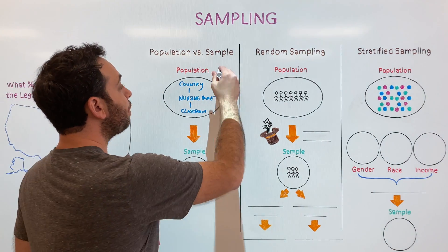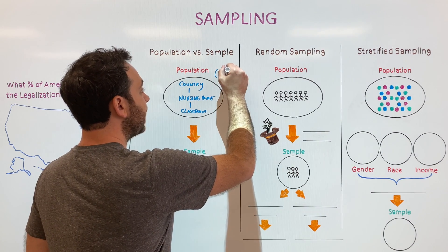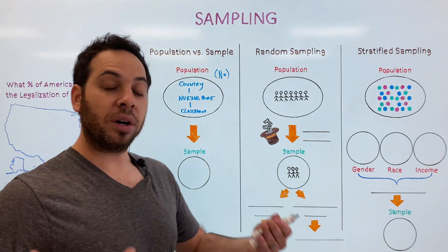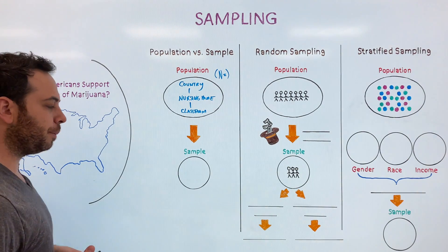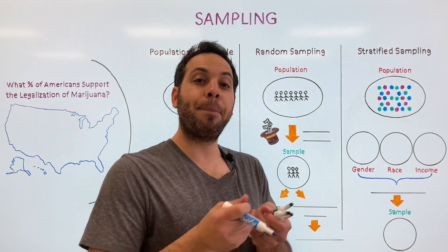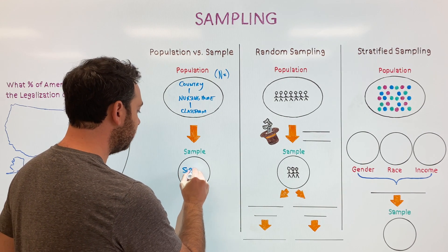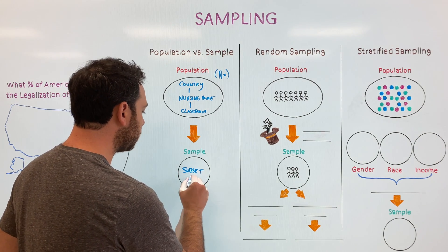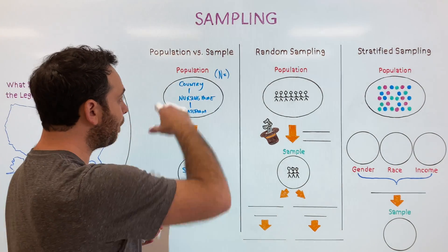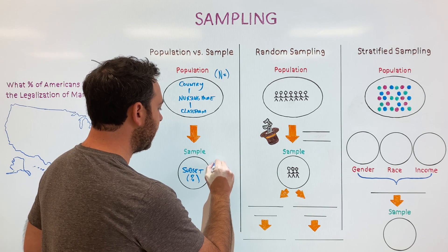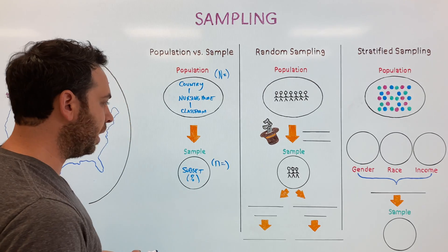Note that the population is represented by the capital letter N. So if you ever see capital N equals a number, you know they're referring to the population. The sample, on the other hand, is a part of the population — a subset. You might denote a sample with a lowercase n. Capital N for population, lowercase n for sample.